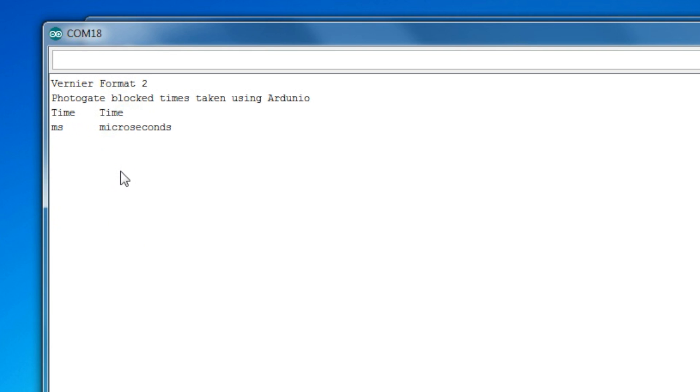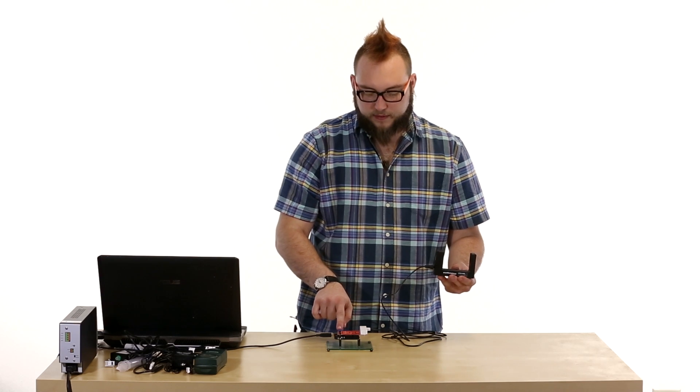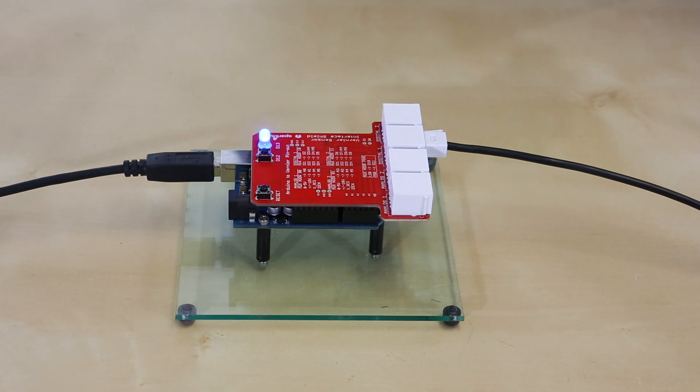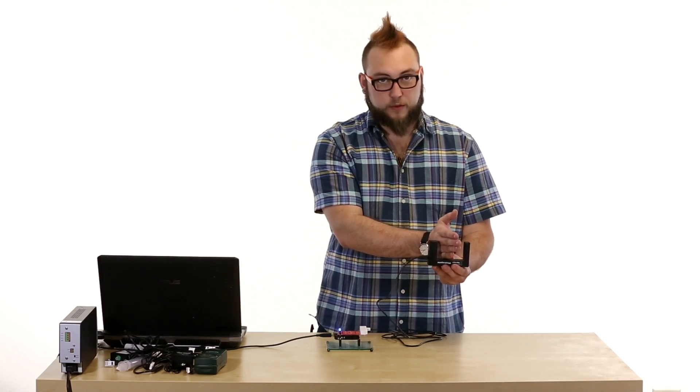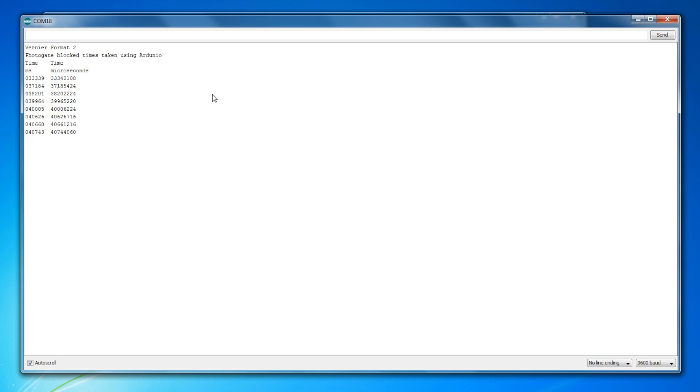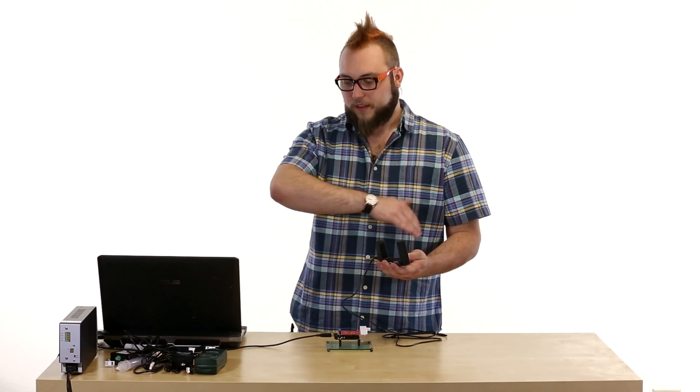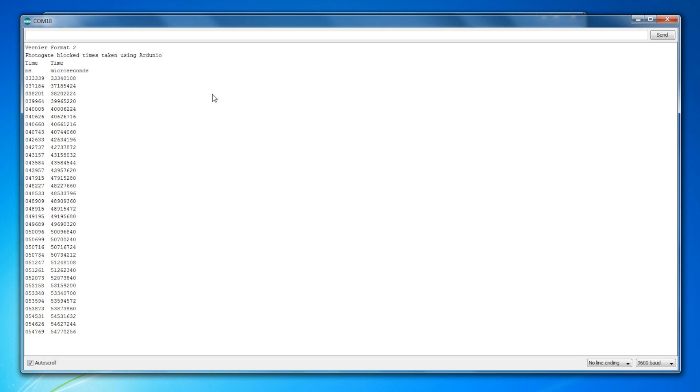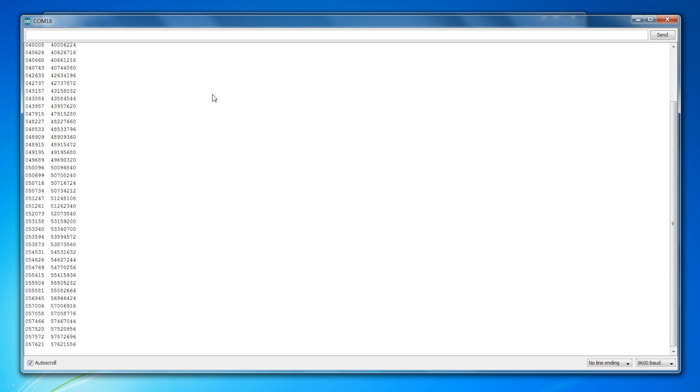So what this sketch does is it basically shows you when the gate was blocked from the time that you started the sketch. And you should see that on the shield this blue LED is off whenever the gate isn't being blocked. So when you block the gate, that light will turn on. And you'll notice as I put my hand in the gate on our sketch here, there are a series of numbers showing up that correlate to the time since the device was turned on when this was blocked. So I'm just swinging my arm back and forth in a pendulum fashion, and you can see it's actually catching the space in between all of my fingers as I go through the PhotoGate here. So it actually has a really quick response time.